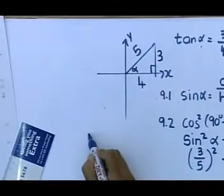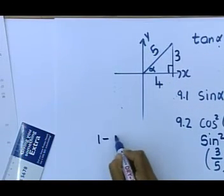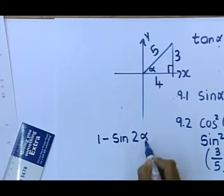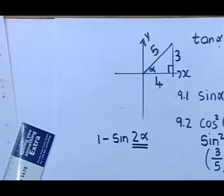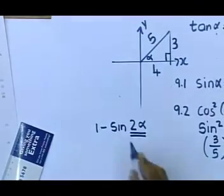En dan, ons laaste vraagie vir vandag is, hoe gaan ek kry 1 minus sin 2 alpha? Ons moet die skets gebruik. Ons skets is reg getrek. Ons laaste vraagie gaan ons uitwerk. 1 minus die sin van 2 alpha. Wat is dit? Leerlinge, ek dink julle weet onmiddellik dat dit is 'n double angle.